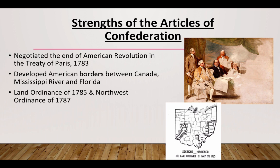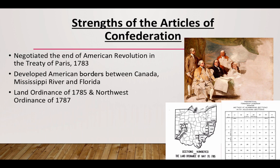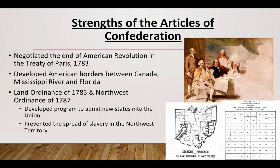You might want to star these because they are important. They developed a program to admit new states into the Union and also prevented the spread of slavery into the Northwest Territory. Ohio is located in the Northwest Territory, pictured here, and that state never had slavery because slavery was banned by the Northwest Land Ordinance of 1787. Absolutely know that — you'll see it on the test.